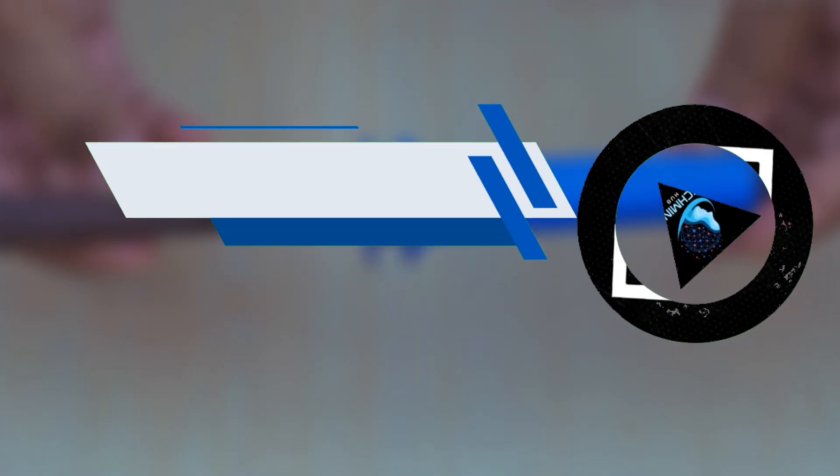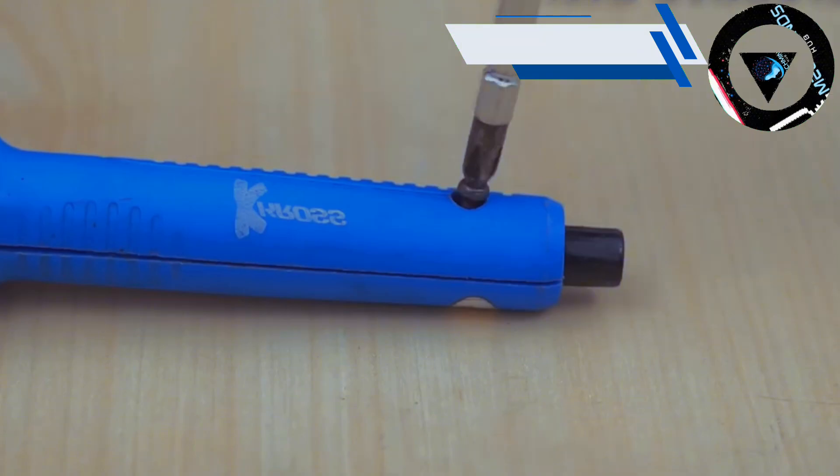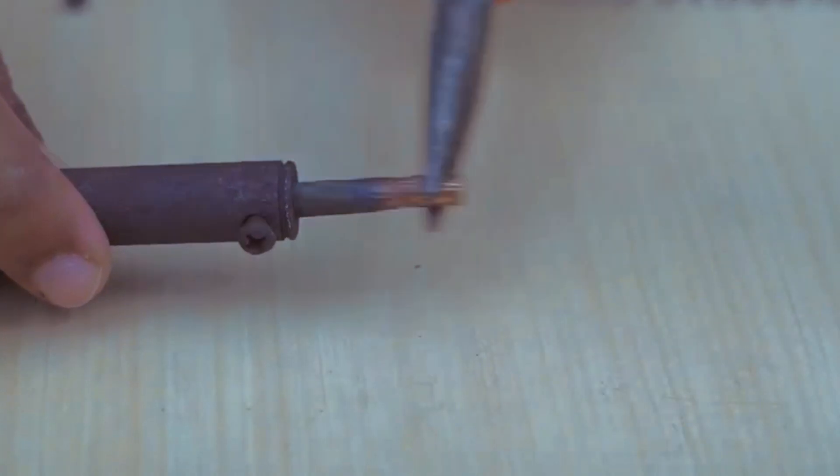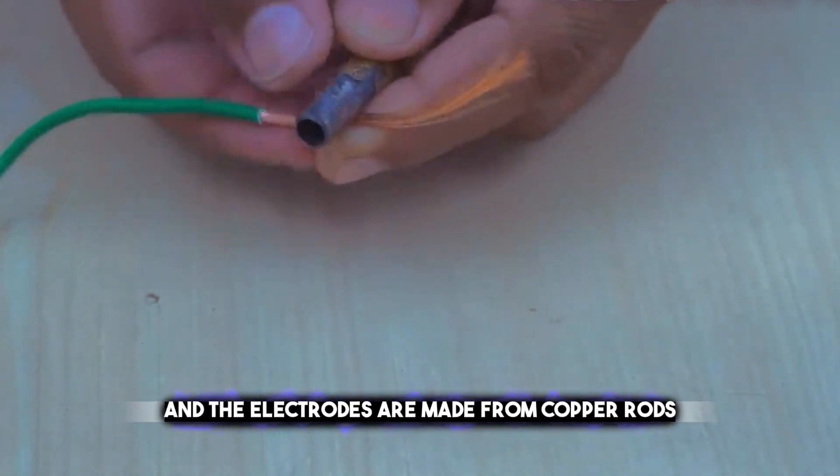A mini welding machine made from a 12-volt battery. This is a simple and cheap way to create a welding machine that can be used for small repairs. The battery provides the power source and the electrodes are made from copper rods.